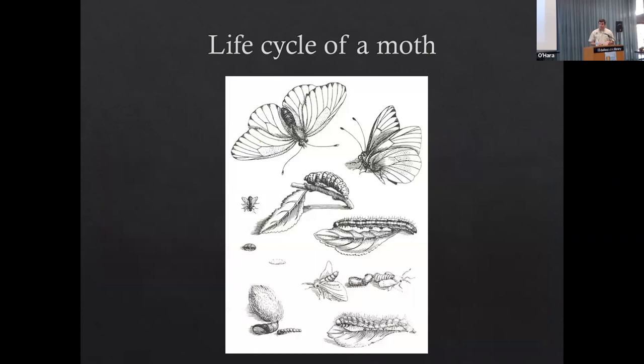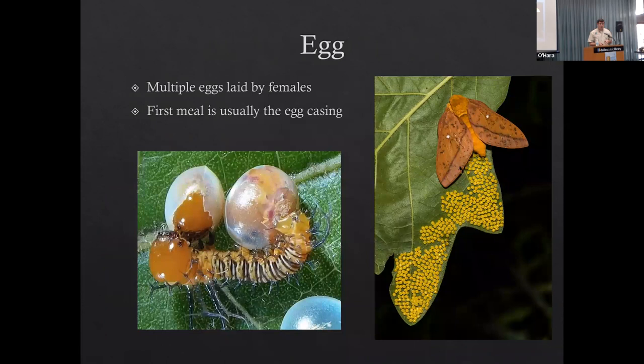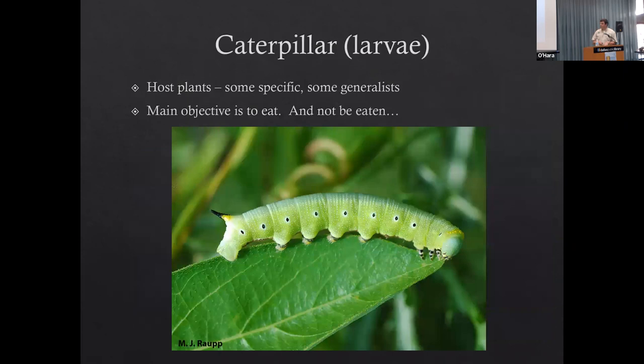Let's look at the life cycle of a moth. We'll start with the egg. A butterfly or a moth lays an egg on a certain plant - be it a general type or a specific type. In the case of moths, it's typically a lot of eggs laid on a specific plant. The first meal is typically the eggshell itself. Then we have the caterpillar stage, or the larval stage of our moth.